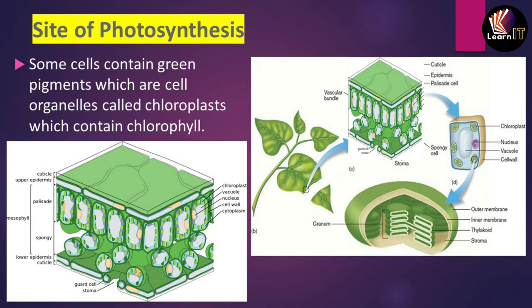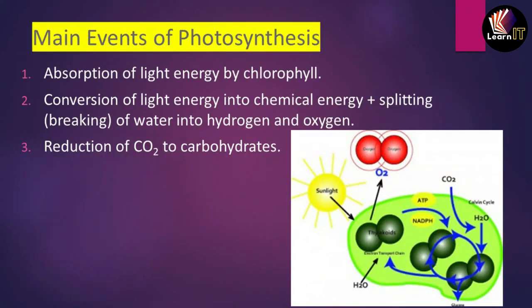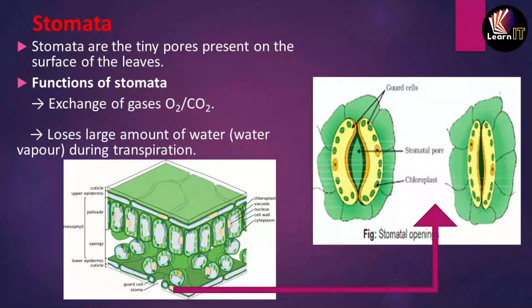This topic covers the events of photosynthesis — what happens during the process. First is the absorption of light energy by the chlorophyll of the leaves. Second is the conversion of light energy into chemical energy, including the splitting of water (H2O) into H2 and O, releasing hydrogen and oxygen. Third is the reduction of CO2 to carbohydrate, meaning the conversion of carbon dioxide into carbohydrate form.